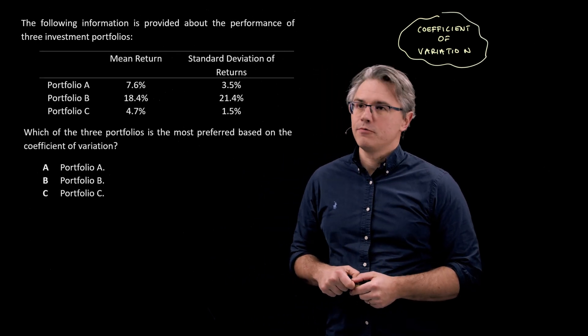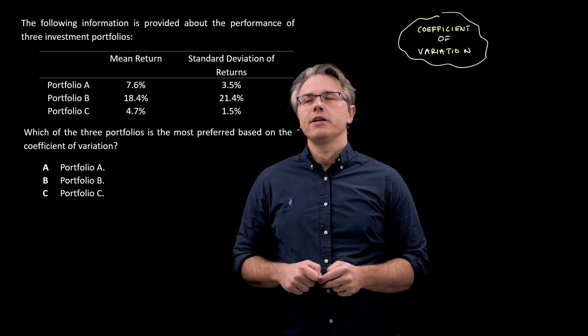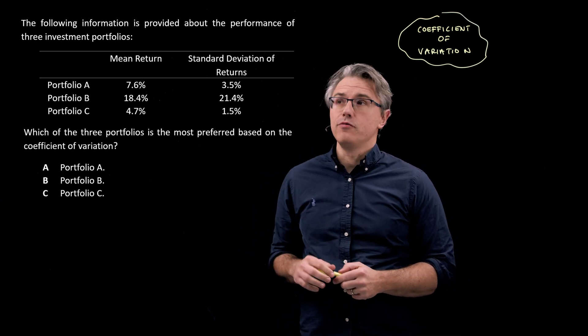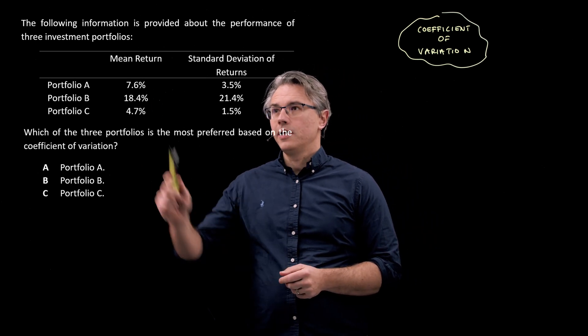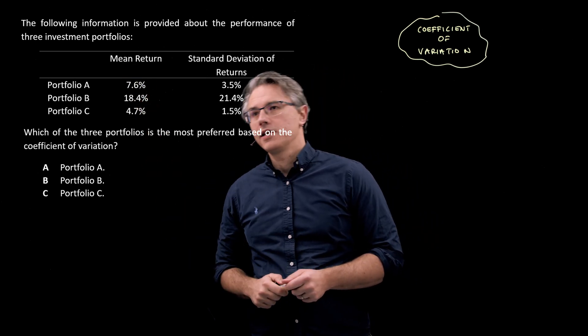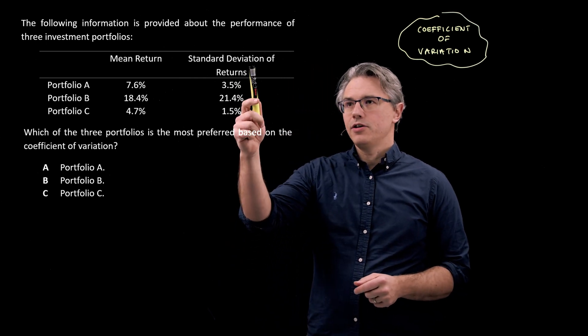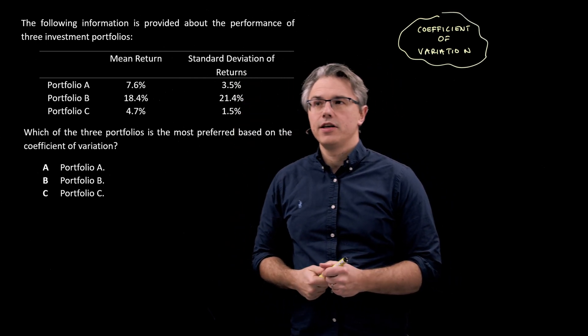So this is the question that I want us to have a go at. The following information is provided about the performance of three investment portfolios, A, B, and C. And we've got a mean return, so the average return, and a measure of dispersion, so standard deviation of returns.